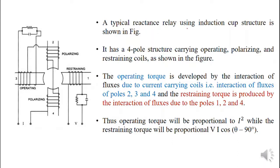A typical reactance relay is shown here using an induction cup structure. It has a four-pole structure — poles 1, 2, 3, and 4 — carrying the operating, polarizing, and restraining coils. The restraining coil is energized by the PT (potential transformer), while the operating and polarizing coils are energized from the CT (current transformer). The operating torque is developed by the interaction of fluxes due to current-carrying coils 2, 3, and 4, which receive the operating and polarizing coils fed from the CT. The restraining torque is produced by the interaction of fluxes due to poles 1, 2, and 4 — a combination of restraining coil plus polarizing coil.